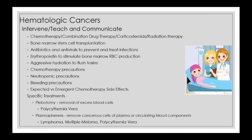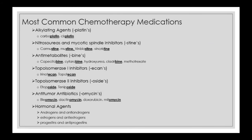Plasmapheresis can remove cancerous cells, sometimes used alongside chemotherapy and radiation for lymphomas. For multiple myeloma, it's appropriate since it's a plasma cancer — removing as much plasma as possible is helpful, though plasmapheresis alone won't cure it if one cancer cell remains. It also helps with polycythemia vera by clearing extra blood cells.